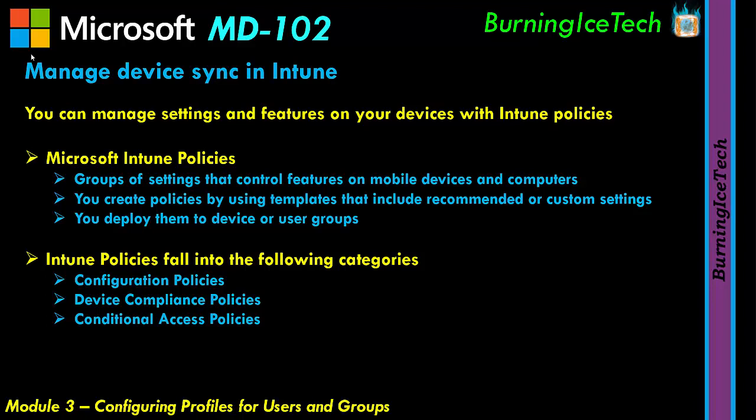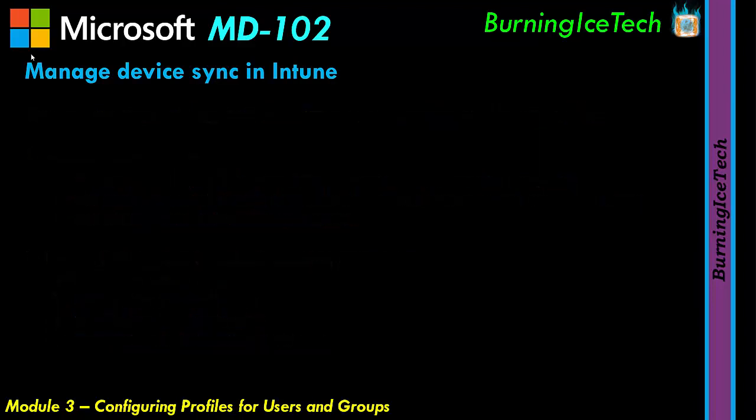Conditional access and compliance policies are the most popular. The fourth category is corporate device enrollment policies. This applies mainly to iOS and Android — Intune by default assumes these are personal BYOD devices. But there are cases where an iOS or Android device actually belongs to the company, and that's where these policies come in.